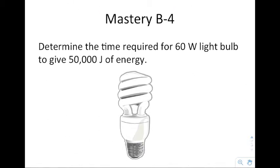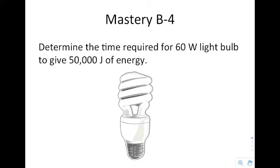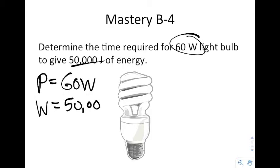Determine the time required for a 60 watt light bulb to give off 50,000 joules of energy. We have 60 watts and 50,000 joules of energy, which means power is 60 watts, work is 50,000 joules, and we want to solve for the time.